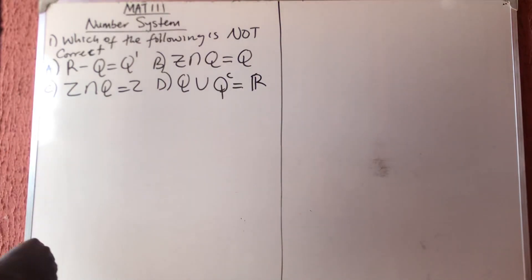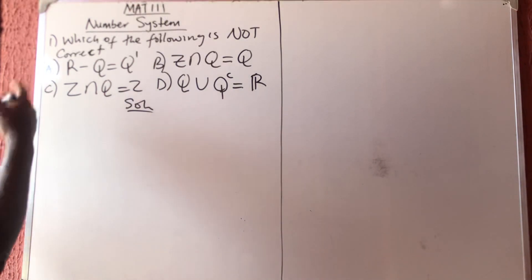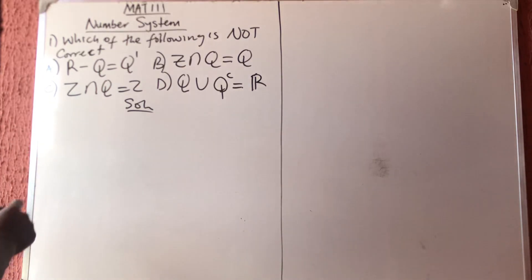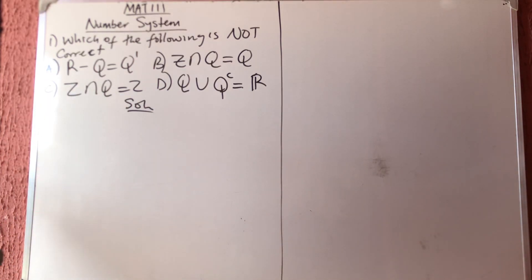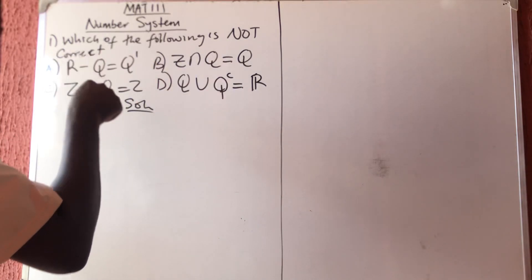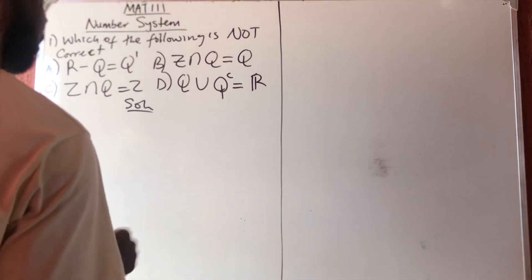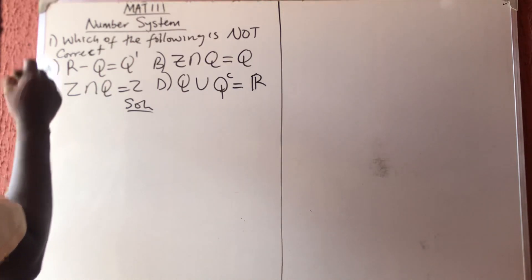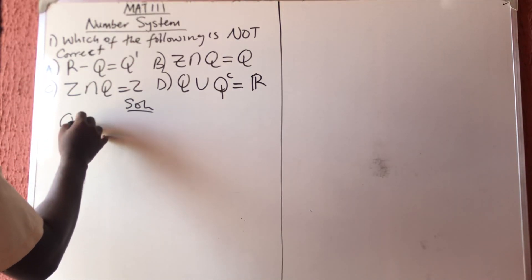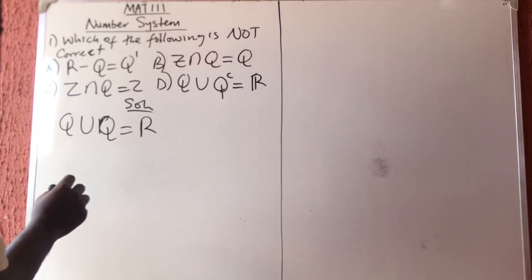Now for the solution: R is the set of real numbers, Q is the set of rational numbers, Q prime is the set of irrational numbers, Z is the set of integers, and N is the set of natural numbers. As I told you in my video on number system, if you combine the rational and irrational numbers you get the real numbers.